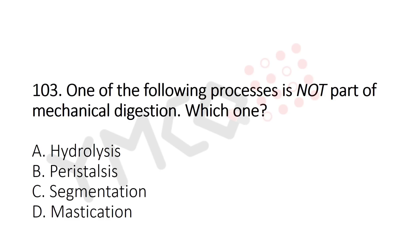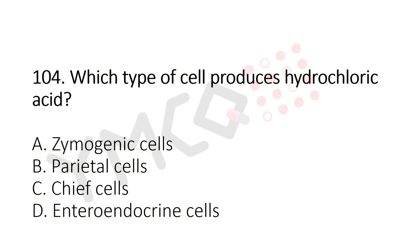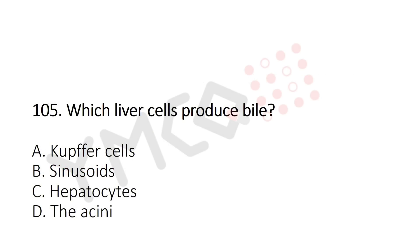The answer is Option A: hydrolysis. Now let's move to Question 104: Which type of cell produces hydrochloric acid? Option A: zymogenic cells, Option B: parietal cells, Option C: chief cells, Option D: endocrine cells. The answer is Option B: parietal cells.